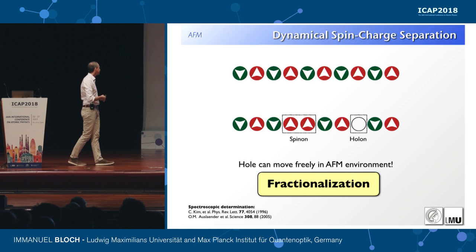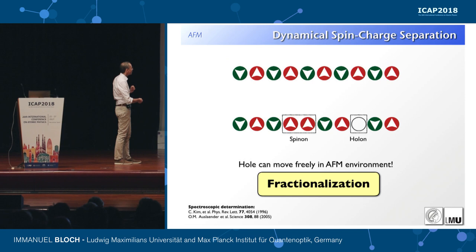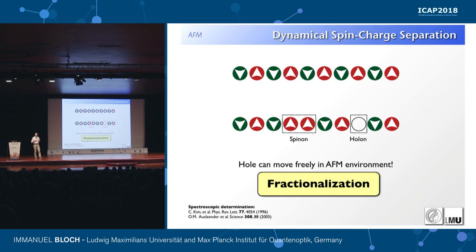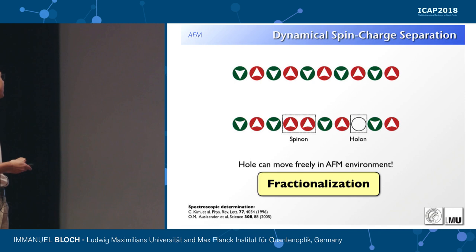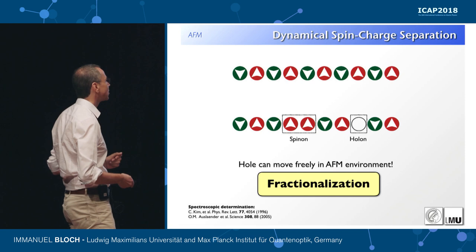In 1D these two quasiparticles are deconfined — they can separate over arbitrary distances with no energy cost. This is what we mean by deconfinement, and it leads to separation of the spin degrees of freedom from the charge degrees of freedom.